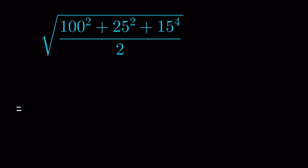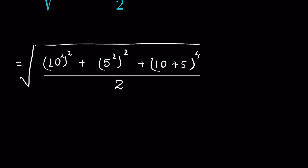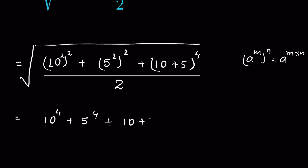We can write 100 squared as (10 squared) whole squared, and 25 squared as (5 squared) whole squared. Then 15 can be written as (10 plus 5), so 15 to the power 4 upon 2 becomes (10 plus 5) whole to the power 4 upon 2, all under the square root. Using the identity (a^m)^n = a^(m×n), this gives us 10 to the power 4 plus 5 to the power 4 plus (10 plus 5) whole to the power 4 upon 2, under the square root.